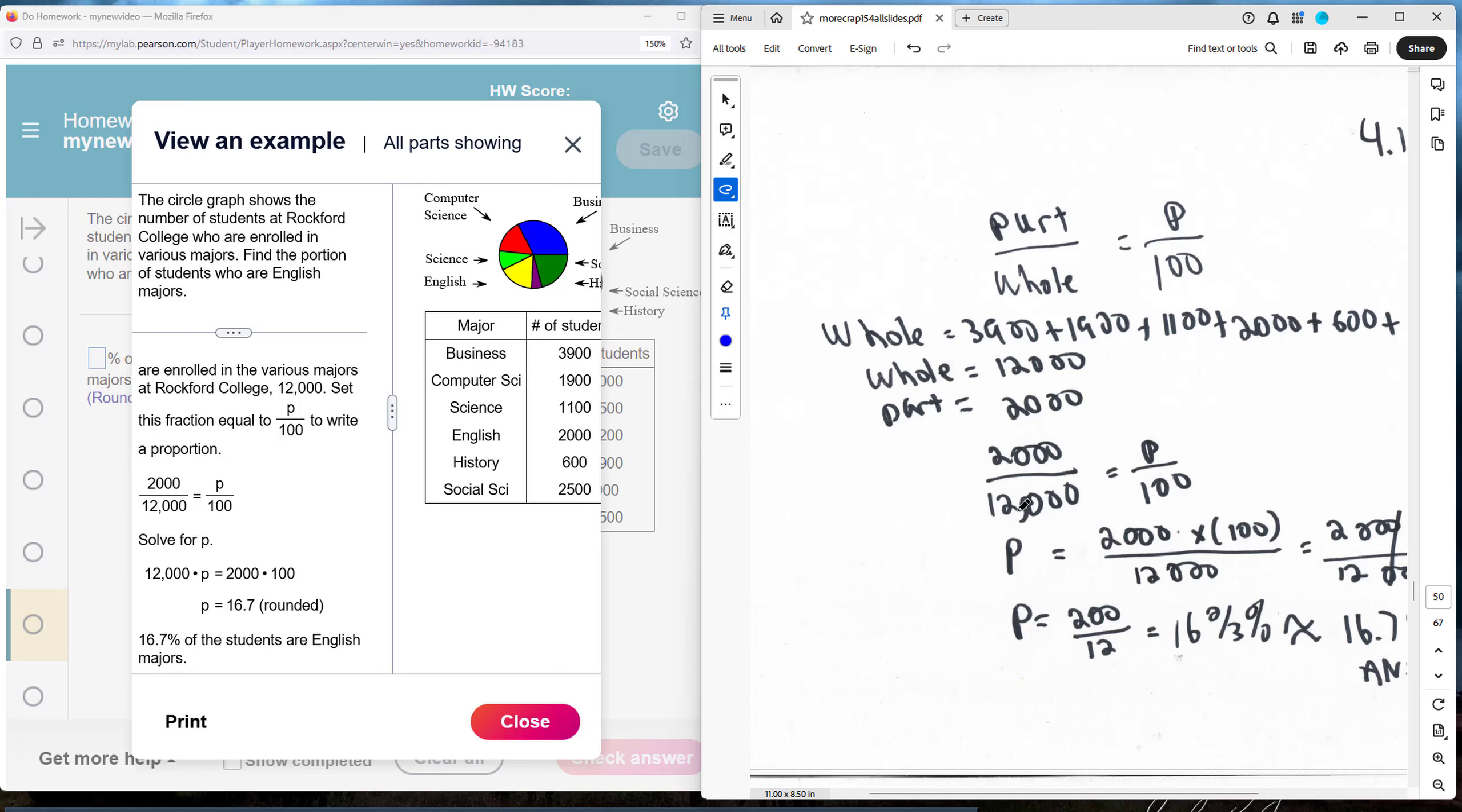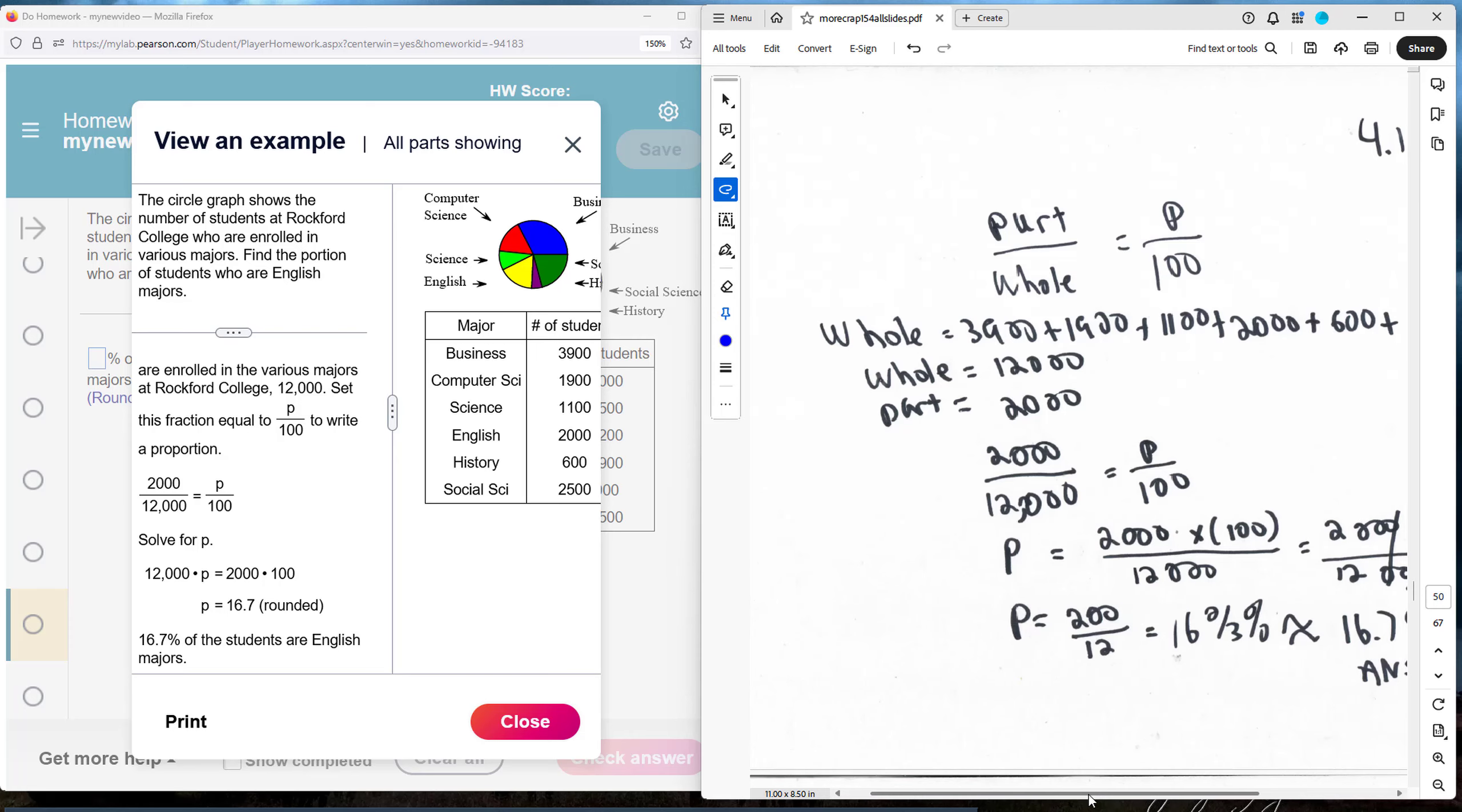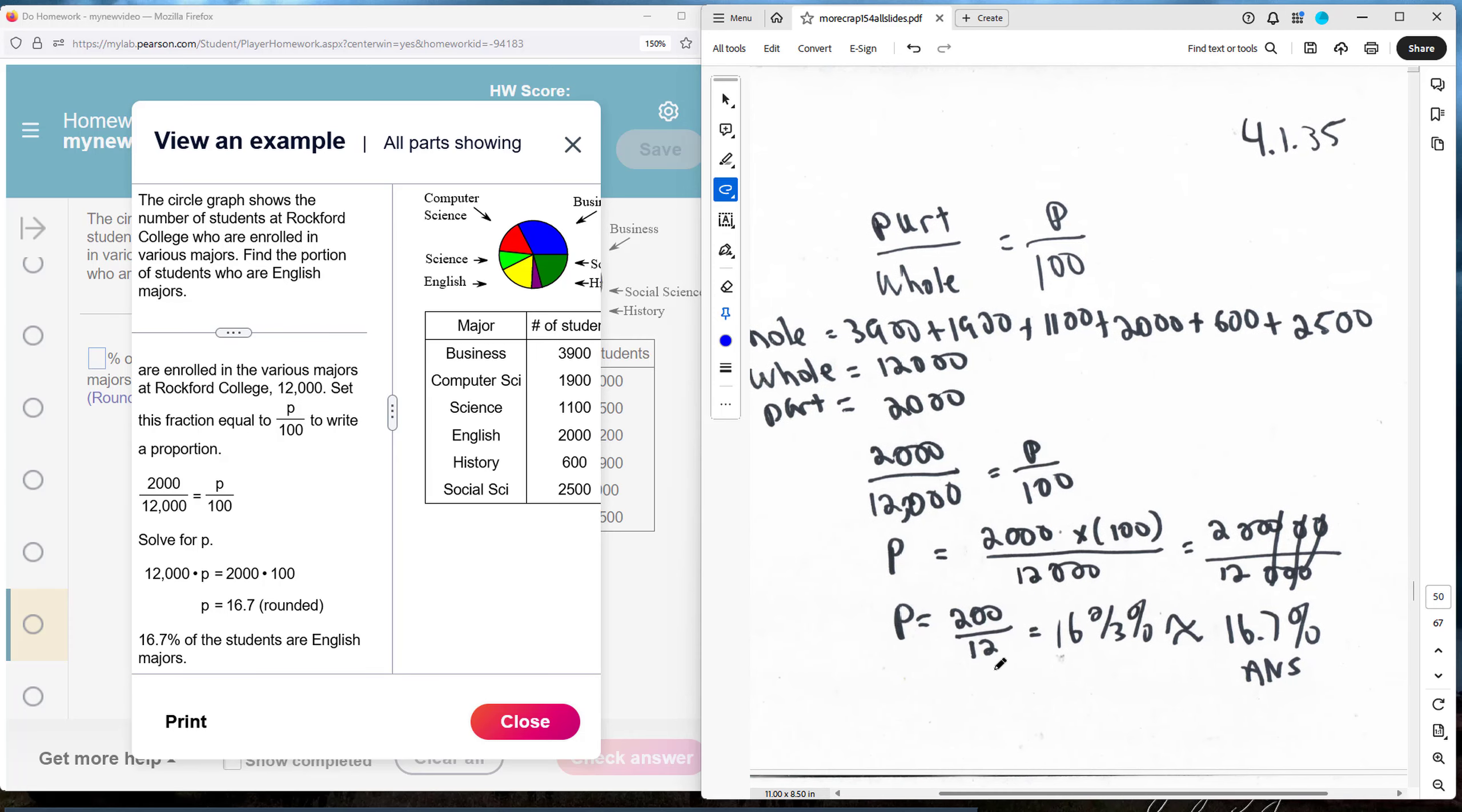So I have 2,000 over 12,000. I can find the percentage by cross-multiplying and dividing. So I'm going to have 2,000 times 100 divided by 12,000. In this case here, I cancel out each 10. 10 there, 10 there, and 10 there. And I'm left with 200 over 12. And I divide this out, and I end up with 16 and two-thirds percent, rounded to 16.7 percent.